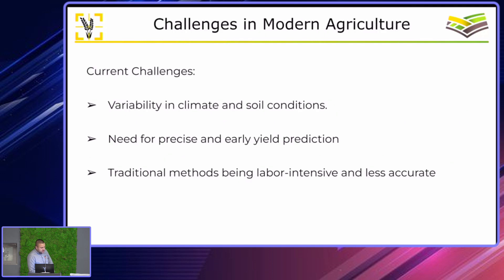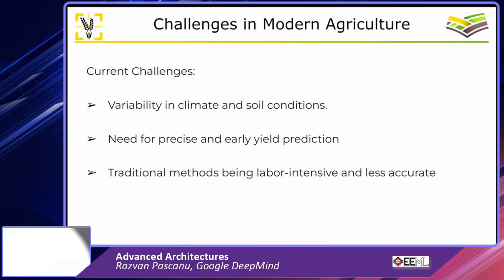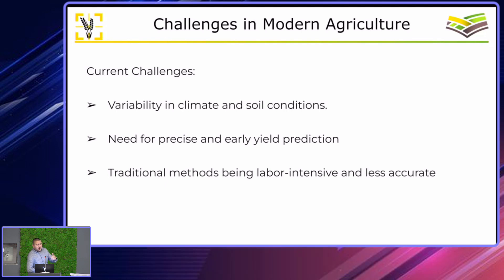So what are the challenges? As I said at the beginning, this is not something new, but it's not very accurate. In papers published today, there is a lack of accuracy in prediction models. Why? It's because of variability in climate and soil conditions — for example, when you came to Novi Sad it was around 40 degrees, which is not a normal temperature to have for such a continuous period of time.